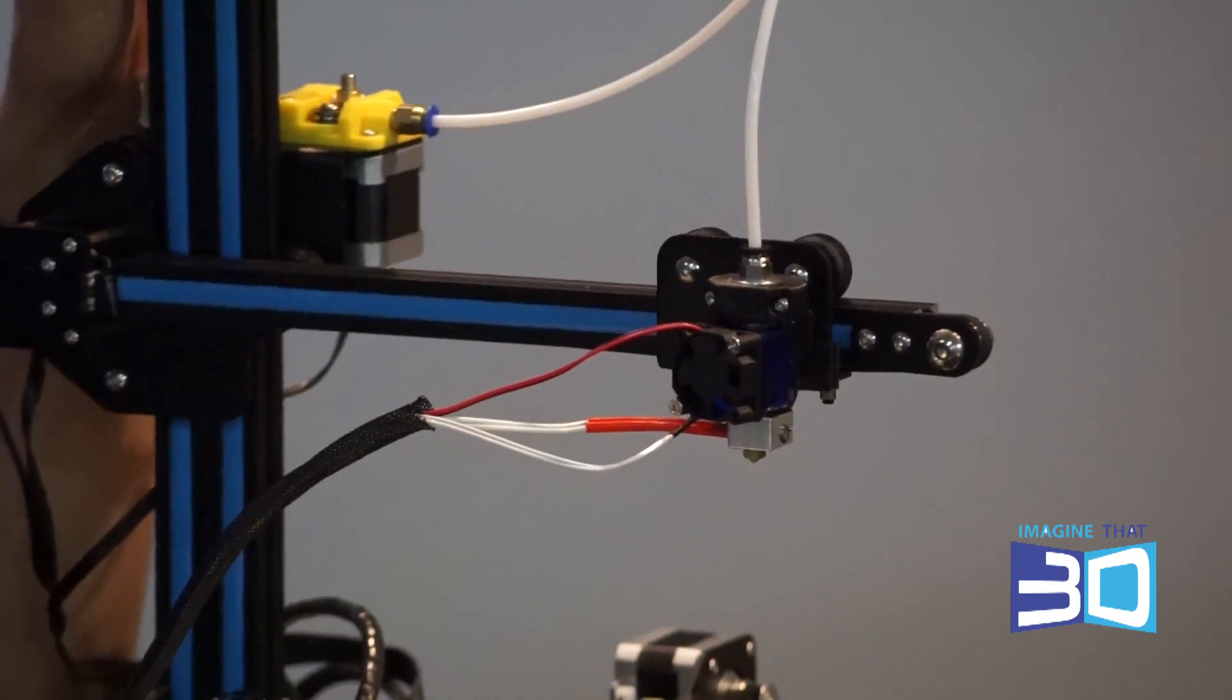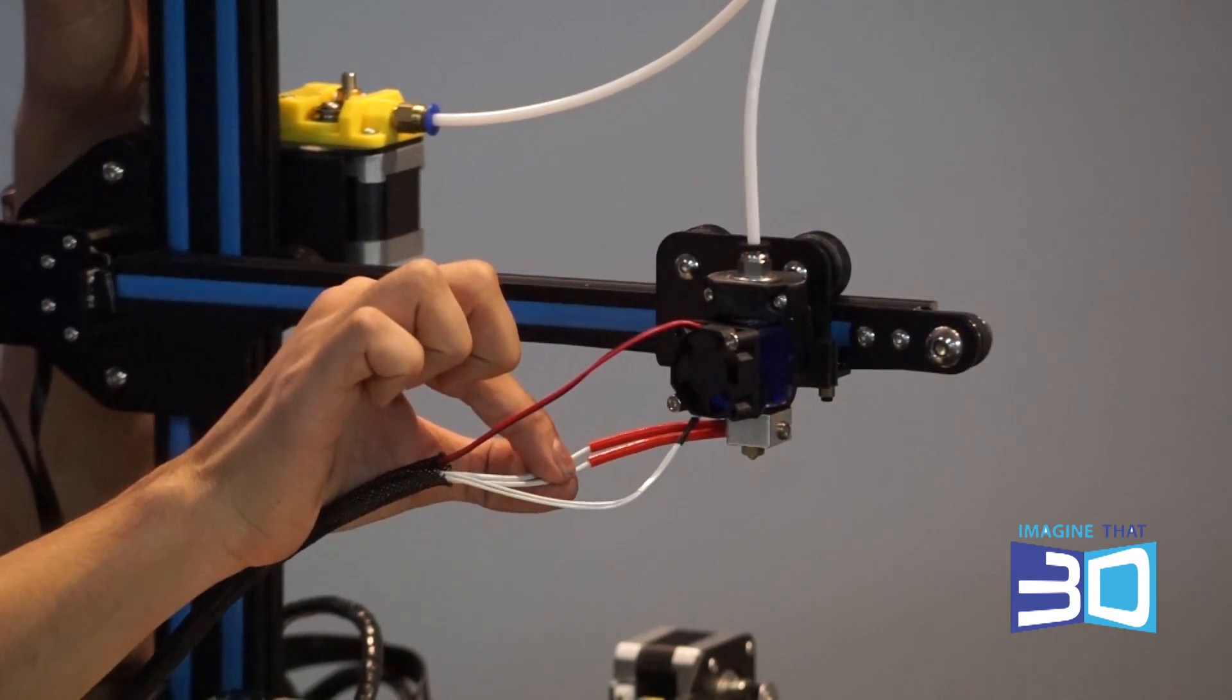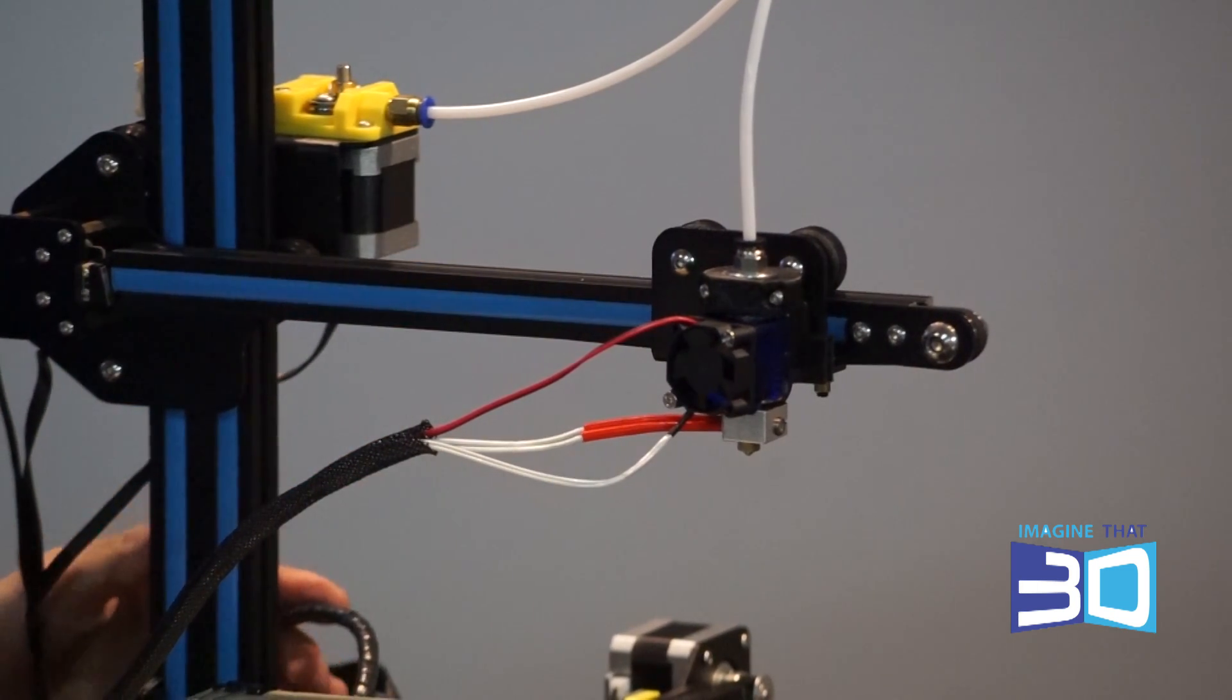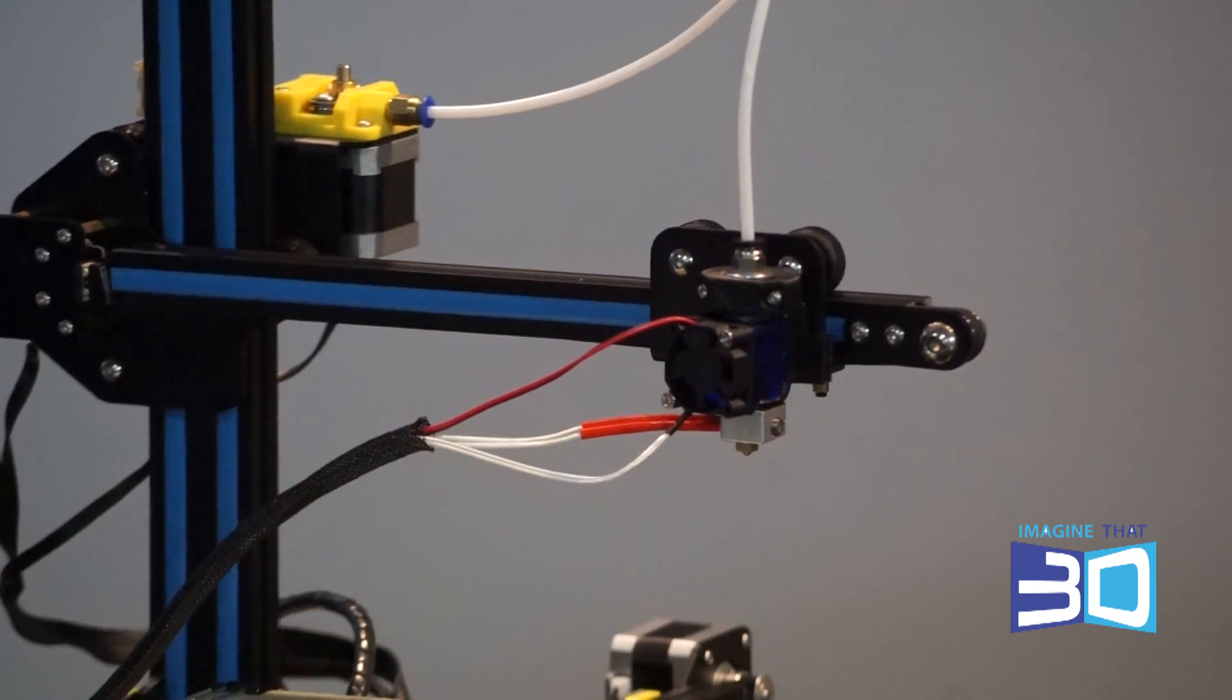Okay, we're going to be replacing the thermocouple. This is what heats your extruder and causes the plastic to melt. First thing to do, make sure your printer is unplugged from the power.